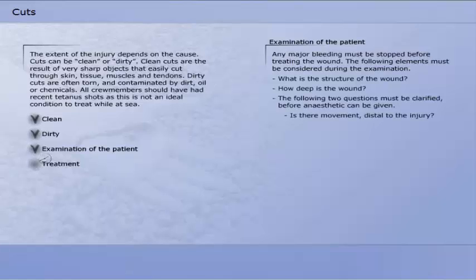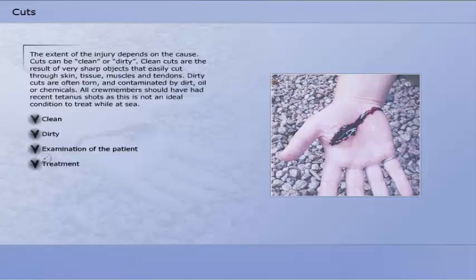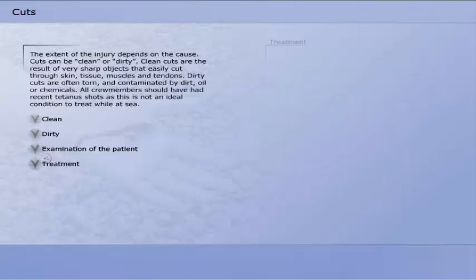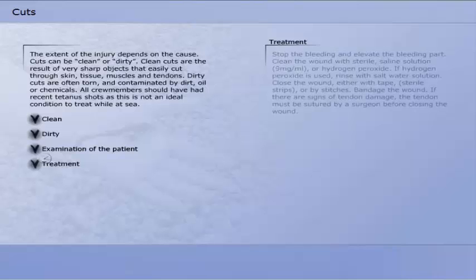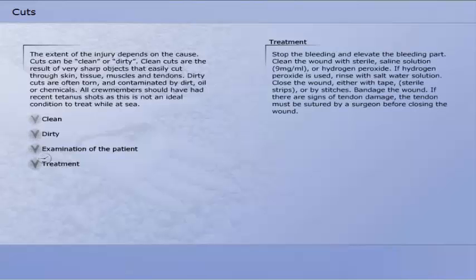Any major bleeding must be stopped before treating the wound. The following elements must be considered during the examination: What is the structure of the wound? The following two questions must be clarified before anaesthetic can be given: Is there movement distal to the injury? Is there feeling distal to the injury? Is it a clean injury?